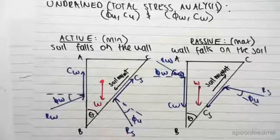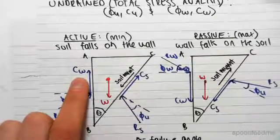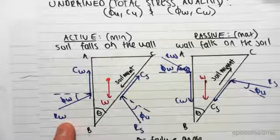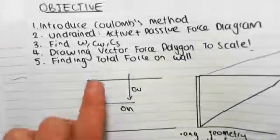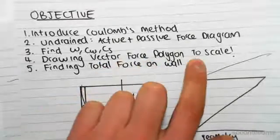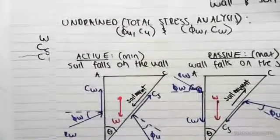A lot of the time we want to know the force on the wall. We already know Cw just from the previous video, we can calculate that. But we need to find Rw. The way we do that is by drawing this vector force polygon to scale, and we can scale off our answer for Rw.